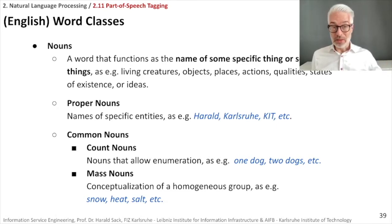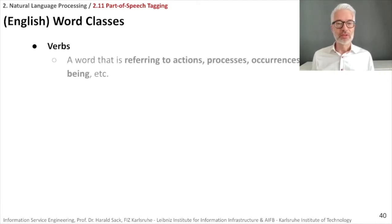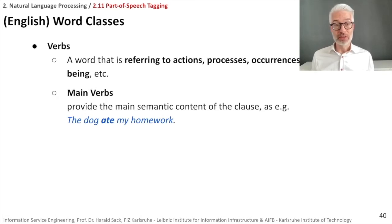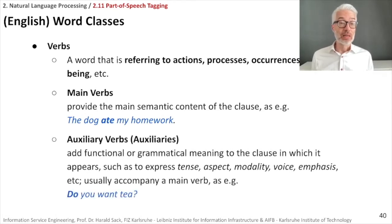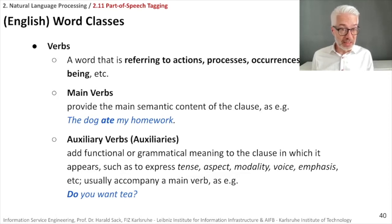Besides nouns, the next most important class is verbs. Verbs refer to actions, processes, occurrences, state of being, and so on. We distinguish between main verbs, which provide the main semantic content of a clause — like 'the dog ate my homework' — and auxiliary verbs, which add functional or grammatical meaning to a clause, such as to express tense, aspect, modality, voice, or emphasis. A typical auxiliary is 'do', as in 'do you want tea', which expresses a question.